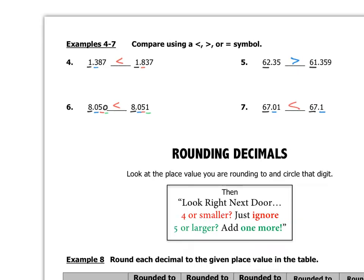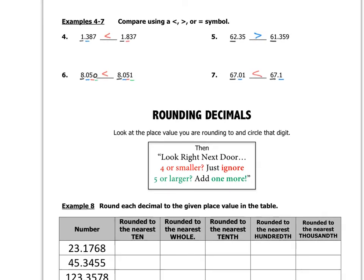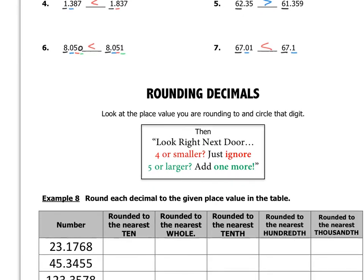Now we're going to look at how to round decimals. Here's a saying to help you remember: we always look at the place value we are rounding to and circle that digit. Then look right next door — four or smaller, we just ignore. Five or larger, we add one more.